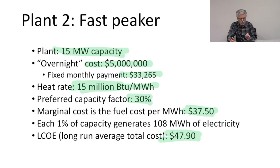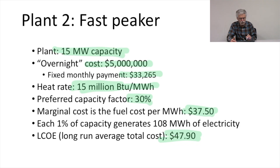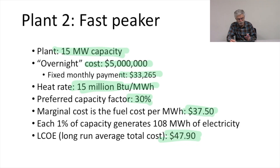It has a fixed monthly payment of $33,265 over the course of our 30-year loan. The heat rate is 15 million BTU per megawatt hour — just shy of twice the heat rate of our base load power plant. The anticipated average capacity factor is 30%. The marginal cost for this plant is the fuel cost, which is $37.50 per megawatt hour.